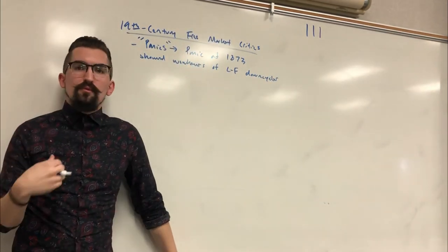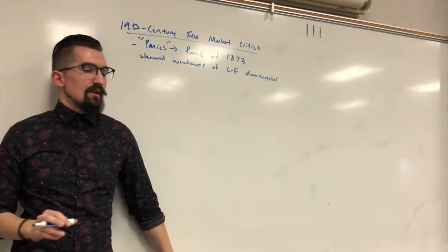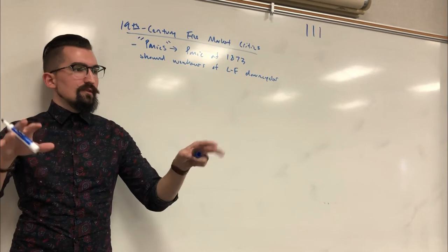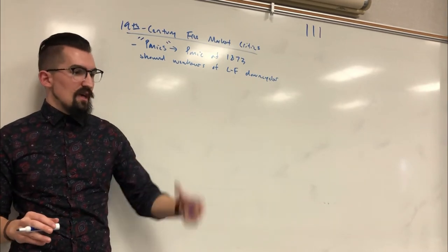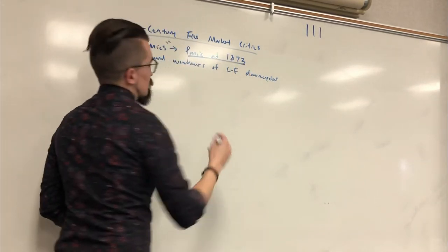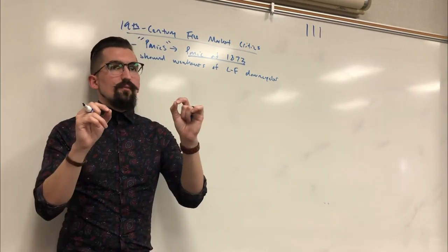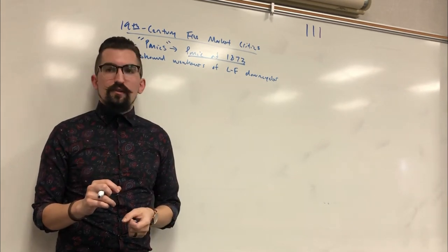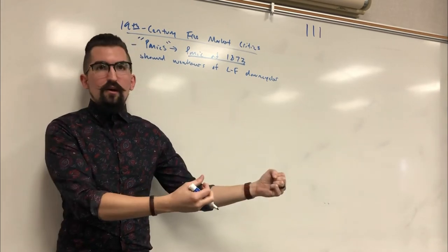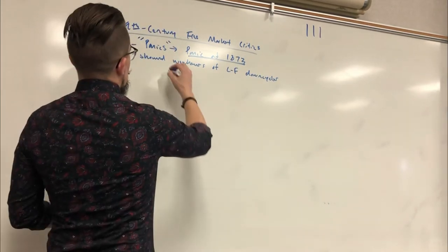A panic is when a run on banks begins — something happens, people fear losses, withdraw funds, banks collapse, and a sequence of job losses and economic depression follows. The Panic of 1873 started when the Austrian banking system collapsed, affecting every trading partner. Fear spread across Europe — people pulled stock and then bank deposits — causing a European-wide recession lasting 10 years.